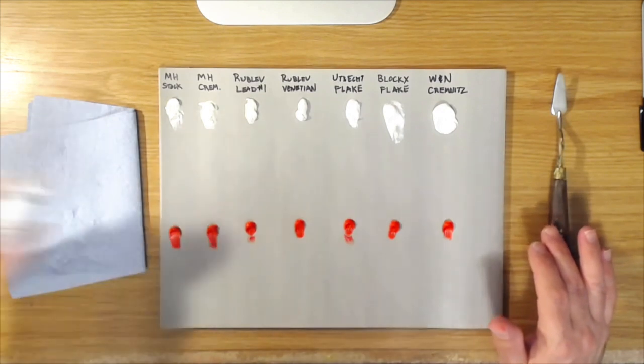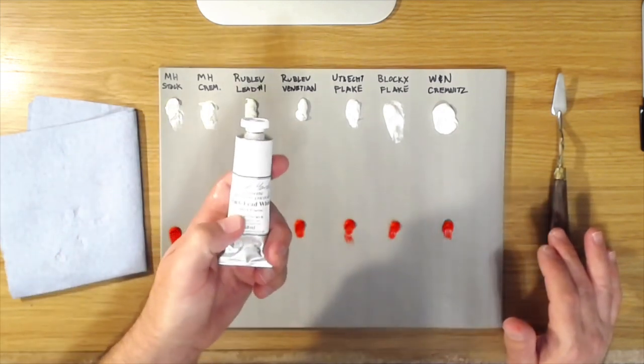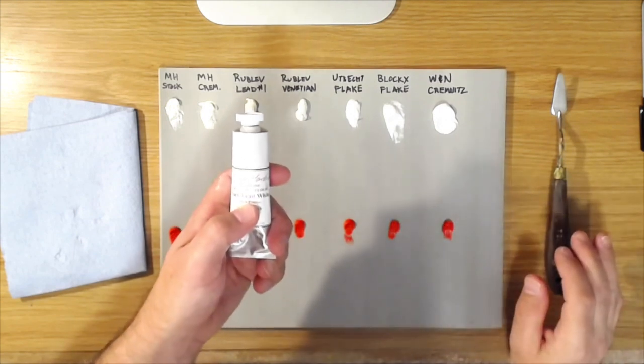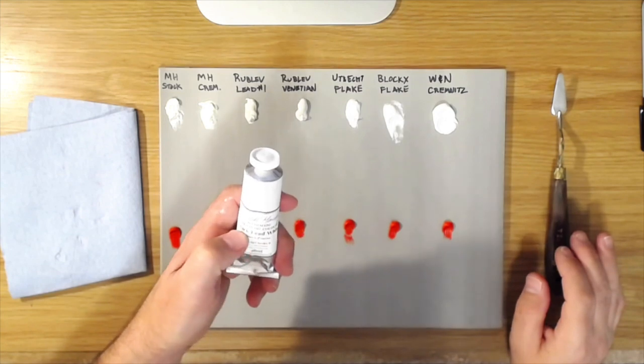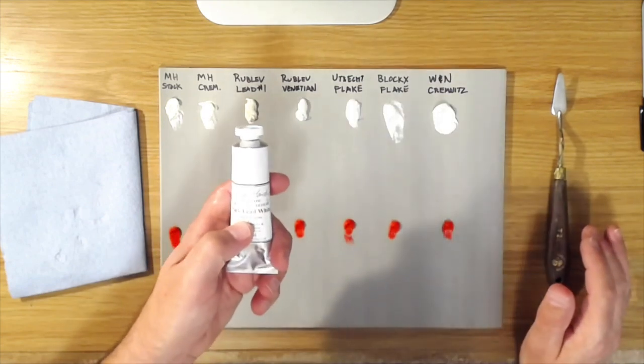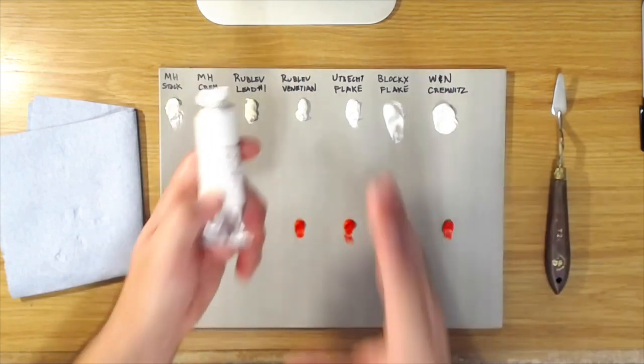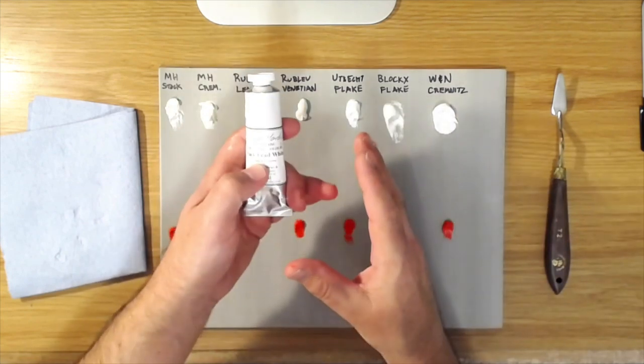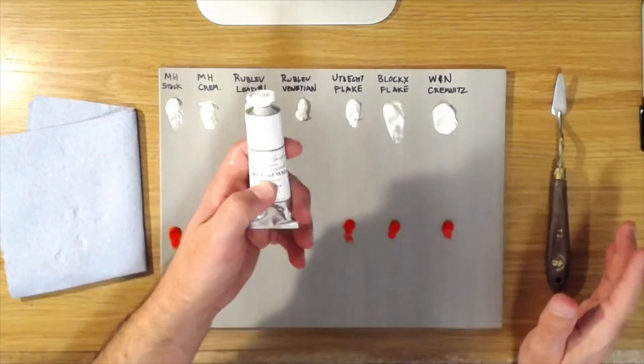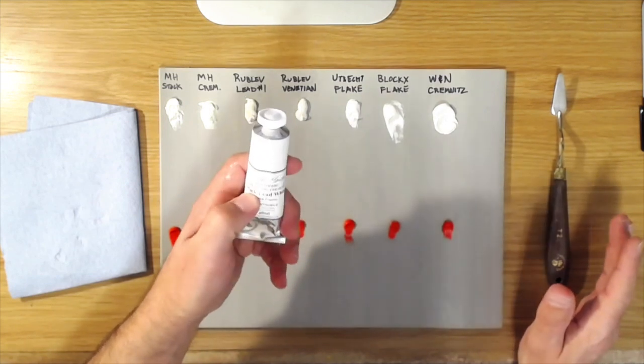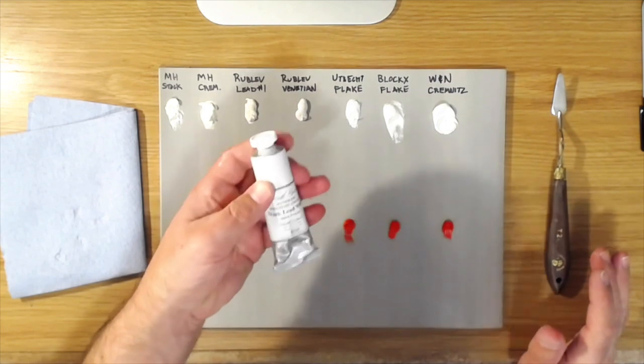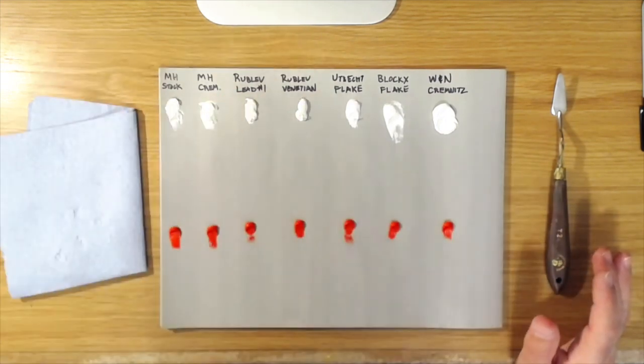Very quickly, let me tell you what each one is. The first one here is Michael Harding Stack Lead White. Stack lead white means that this color was made the traditional way that they used to make lead white in the old days. Michael Harding takes sheets of lead and rolls them up, then suspends them in clay pots over vinegar and actually buries them in manure. The vinegar fumes combined with the lead make the lead carbonate, which is what the pigment is. It's called stack lead white because of that way that they make it, which is the traditional way.